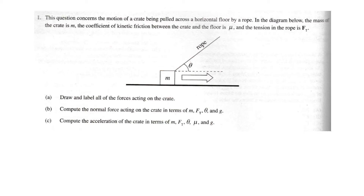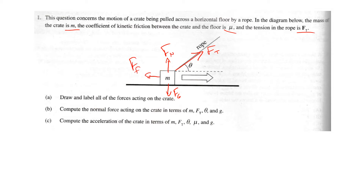Let's work on some dynamics review today. This question concerns the motion of a crate being pulled across a horizontal floor by a rope. In the diagram, the mass of the crate is m, the coefficient of friction is mu, and the tension of the rope is ft. Draw and label all the forces. First, ft going right. Second, gravity — fg. Third, normal force — fn. Finally, friction — ff.